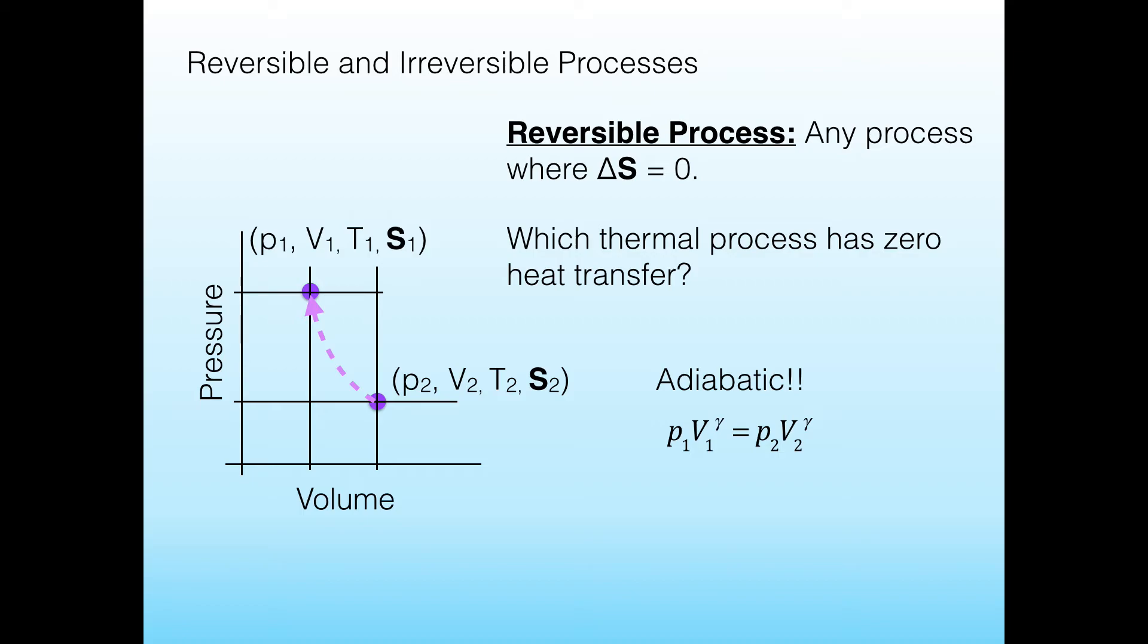So anytime that you're on one of these lines, which go between two different points but have this property where pressure times volume raised to the gamma is a constant, those are adiabatic lines. And on those adiabatic lines, that's where entropy is conserved.